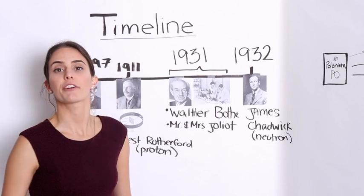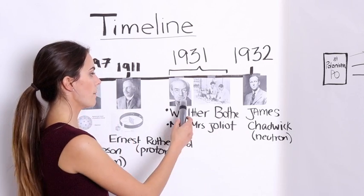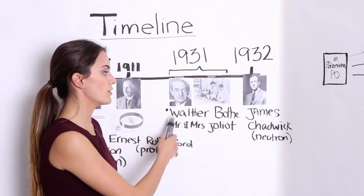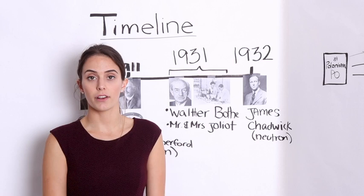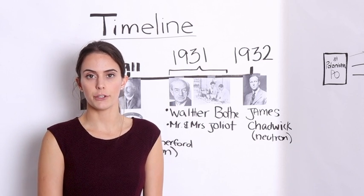After hearing about the gamma ray hypothesis, neither Chadwick nor Rutherford were convinced. Following Mr. and Mrs. Joliot and Walter Bothe's experiments, Chadwick decided to do one of his own, this time with the goal of finding the proof of a neutron.